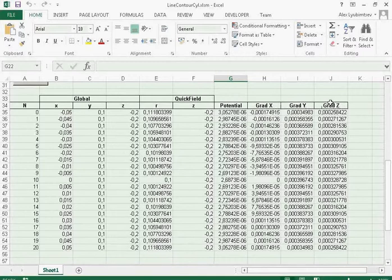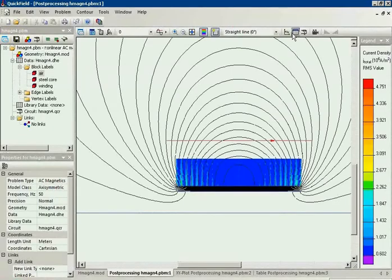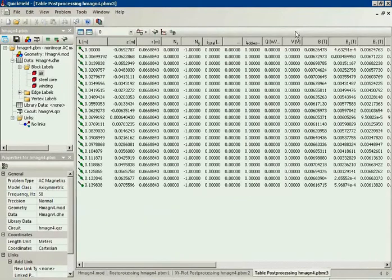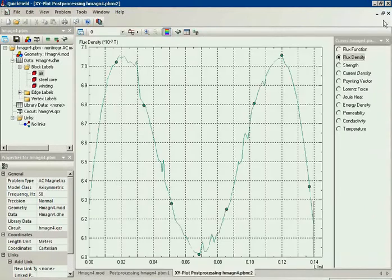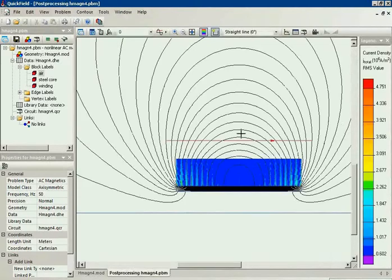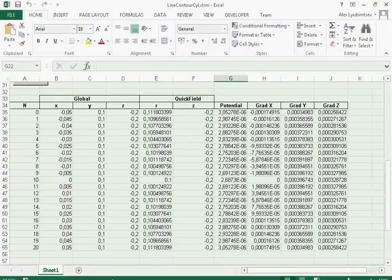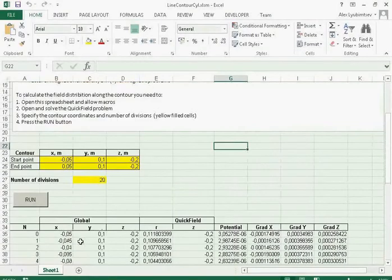So it works pretty much the same way as you get the field distribution in QuickField. The only difference is that in QuickField you can draw the contour using graphic user interface and this will be only the cylindrical contour, and with our tool you can specify the contour coordinates in Cartesian system.